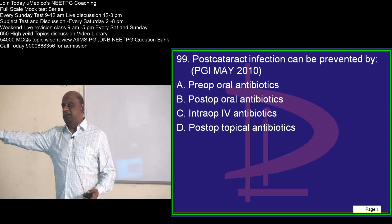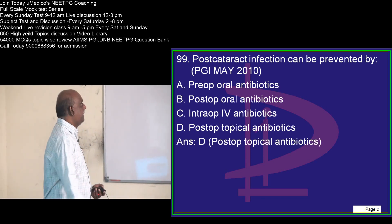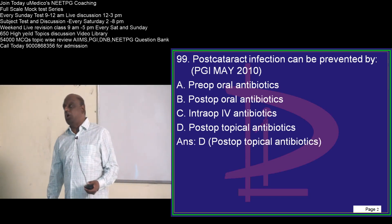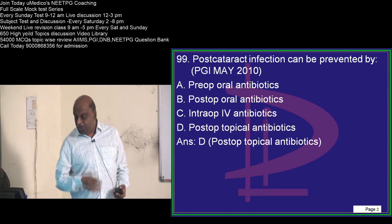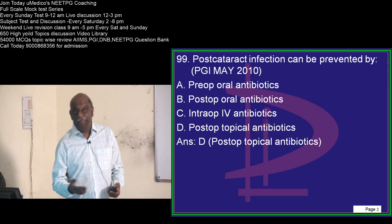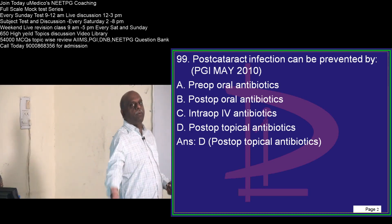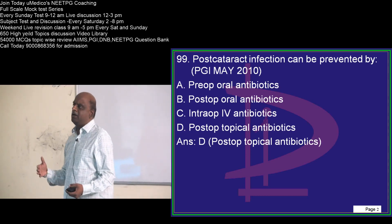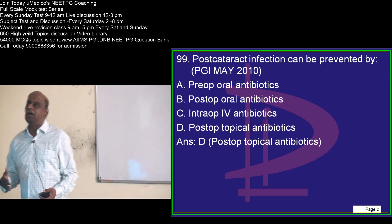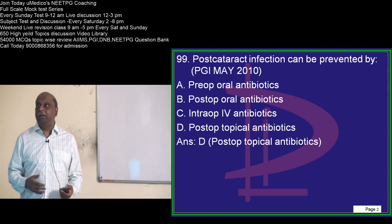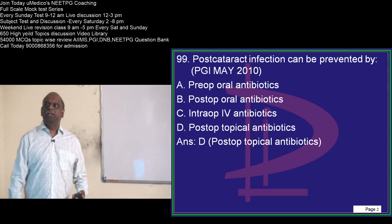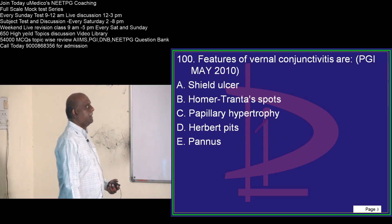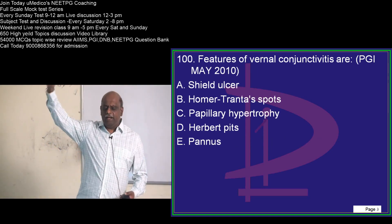Post-cataract infection can be prevented basically by giving topical antibiotics post-operatively, which play the major role in decreasing post-cataract infection. This is a major challenge, especially when you conduct Rotary Club or government programs of cataract operations, where post-operative infection control becomes a major challenge.